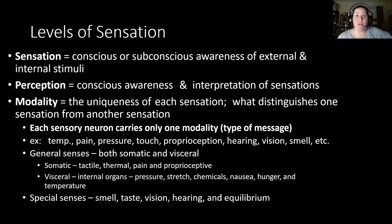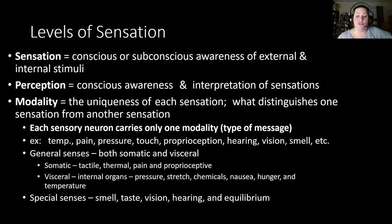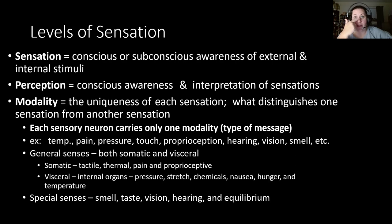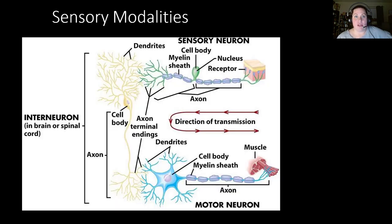These sensations can be broken down into two main categories. General senses are both somatic — relating to the skin — and visceral, meaning your internal organs. Somatic general senses include tactile touch, thermal, pain, and proprioception. Visceral senses include pressure, stretch, chemical composition, nausea, hunger, and temperature. The other main category is special senses, which are very specific and located in one distinct area — smell in the nose, taste on the tongue, hearing in the ears, and vision in the eyes.